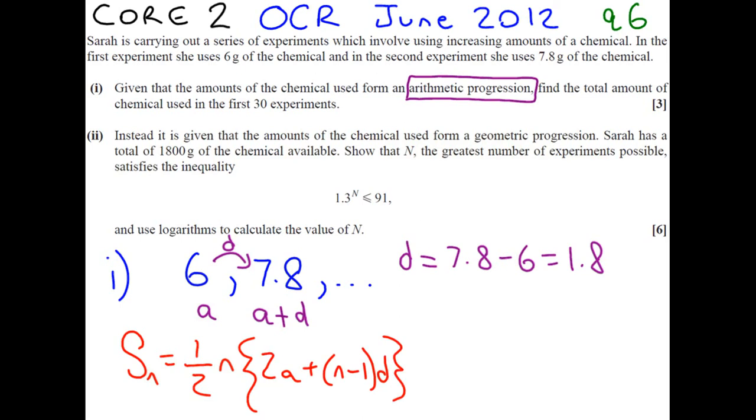So the values that we need for our formula are n, A and D. We've just talked about what D is, it's a common difference. A represents the first term, which is 6.